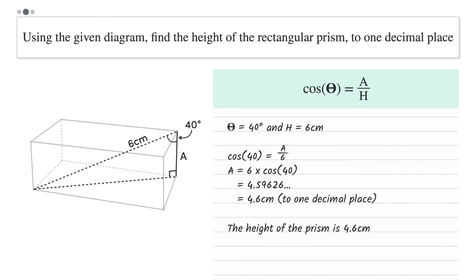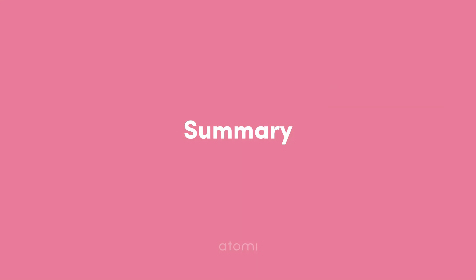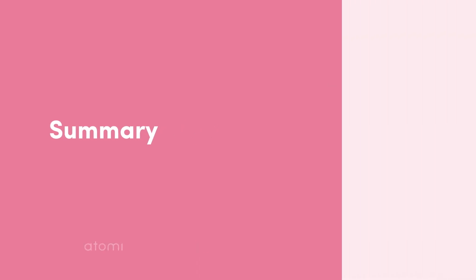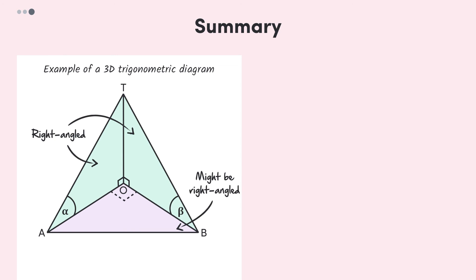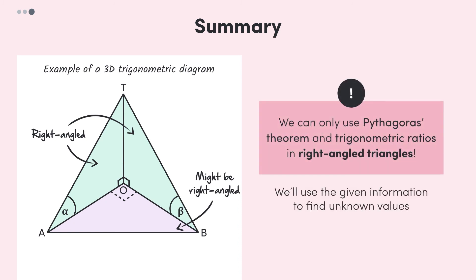And we're done! With that, let's wrap this video up with a summary. In this video, we were introduced to 3D trigonometry. Essentially, we used the information given in a 3D diagram to find out other pieces of unknown information. We did this using Pythagoras' theorem and trigonometric ratios. Remember though, that these can only be used in right angle triangles. So, that's it for this video.